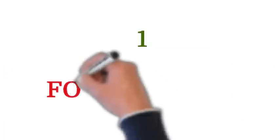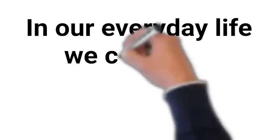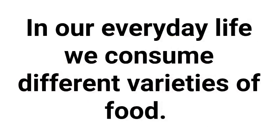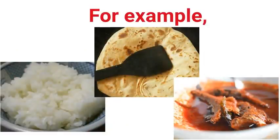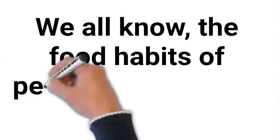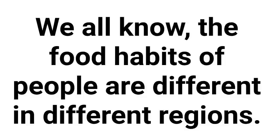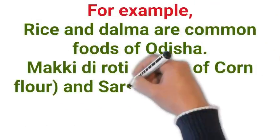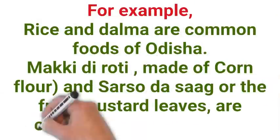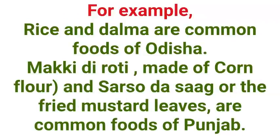Let's discuss food varieties. In our everyday life, we consume different varieties of food — for example, rice, chapati, fish curry, etc. We all know the food habits of people are different in different regions. For example, rice and dalma are common foods of Odisha, while makkadi roti and sarsudasag are common foods of Punjab.